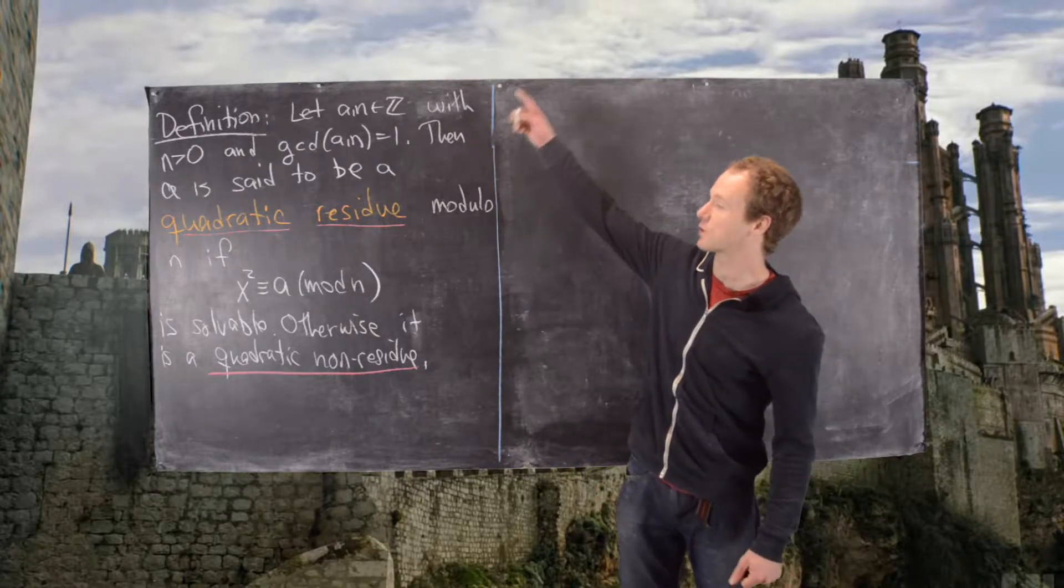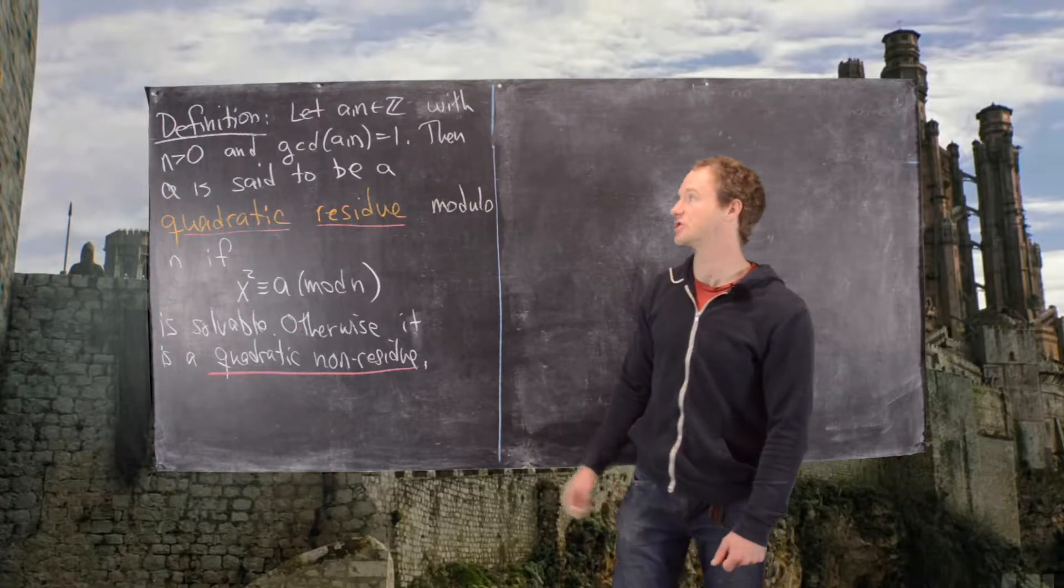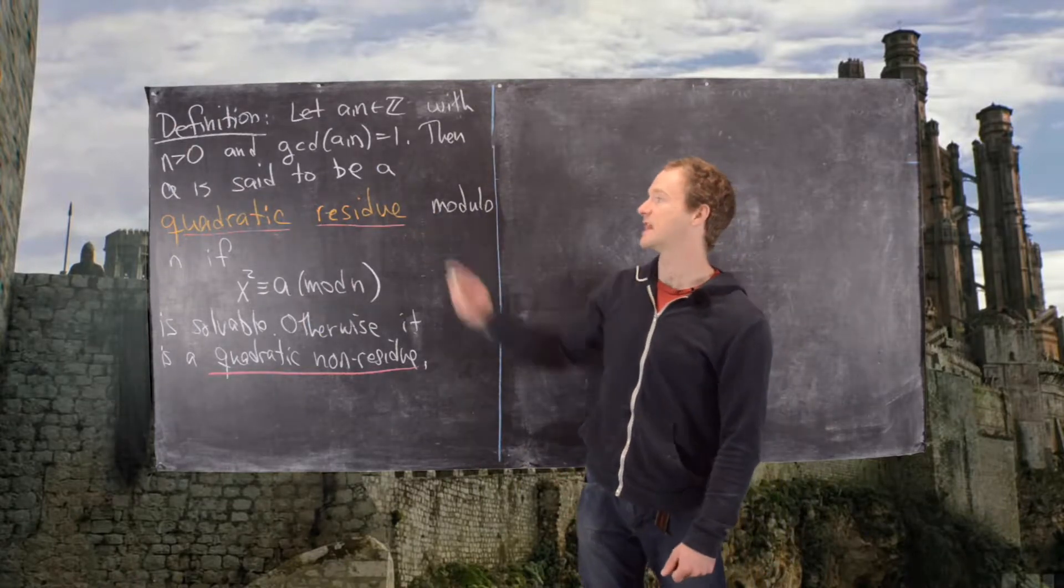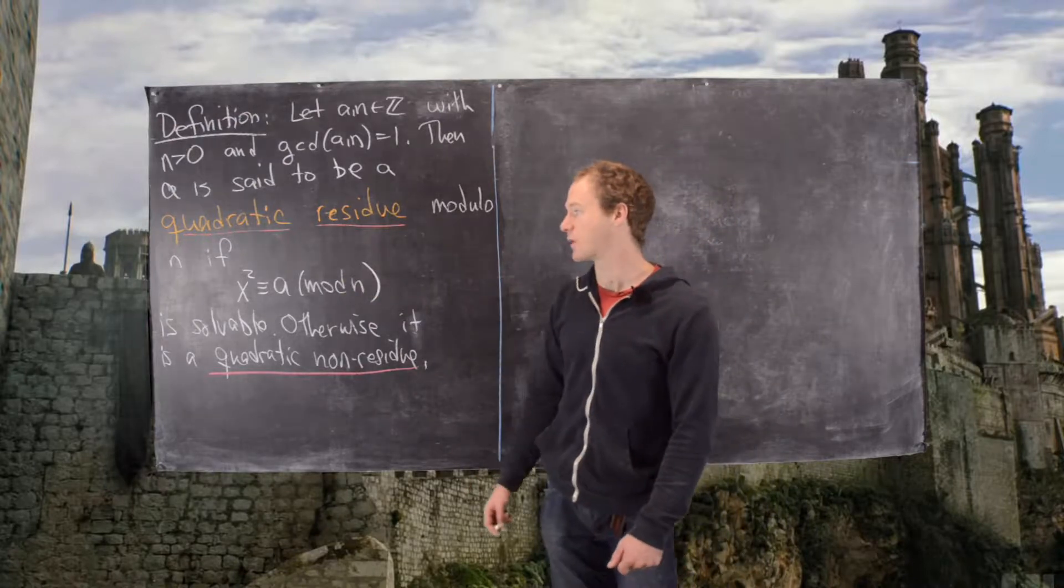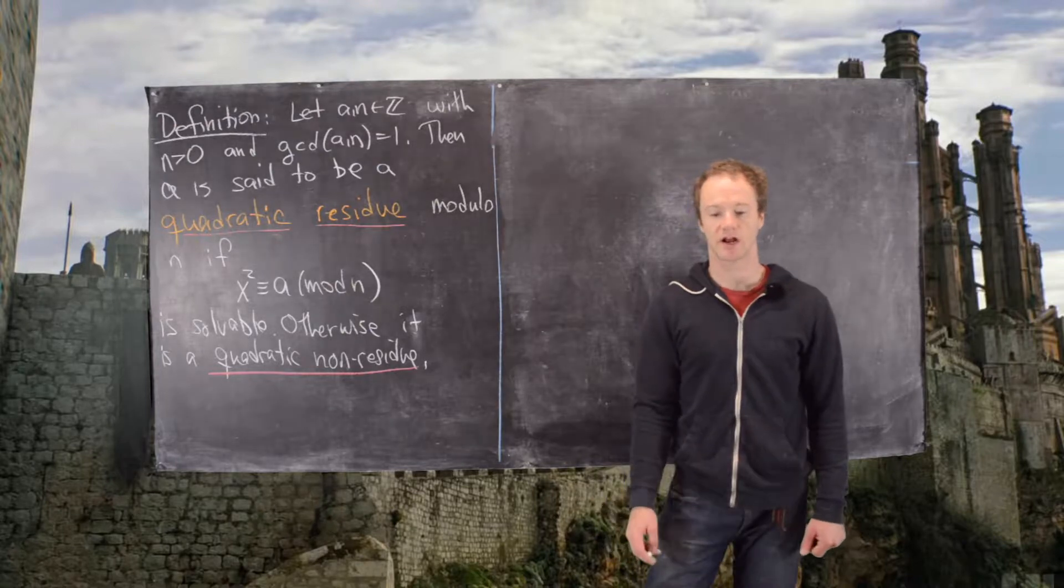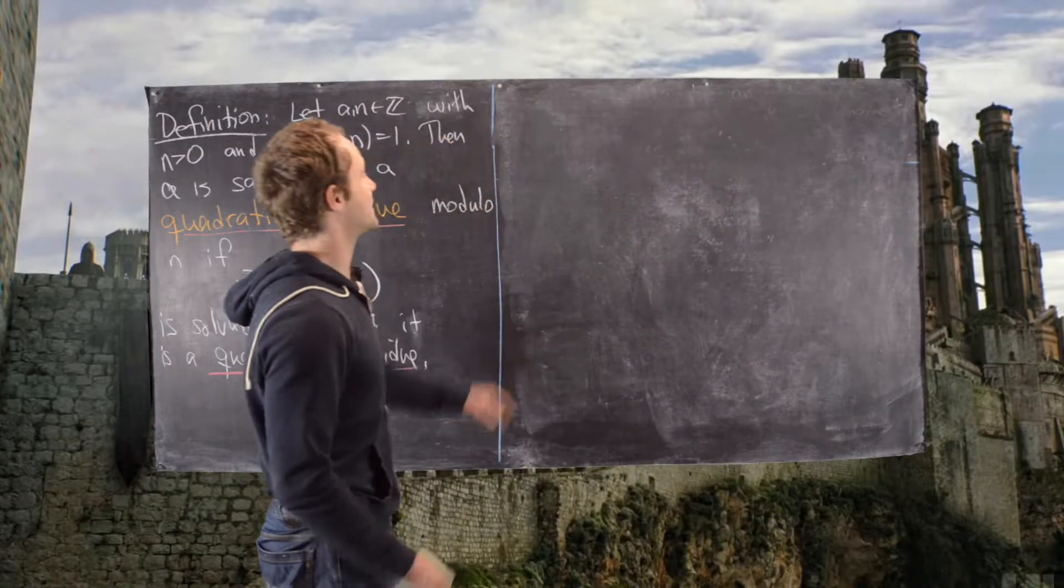I just want to recall what a quadratic residue is. So if we have a and n are integers, n is a natural number and they're relatively prime, then we say that a is a quadratic residue modulo n if x squared is congruent to a mod n has a solution. Otherwise it's called a quadratic non-residue.